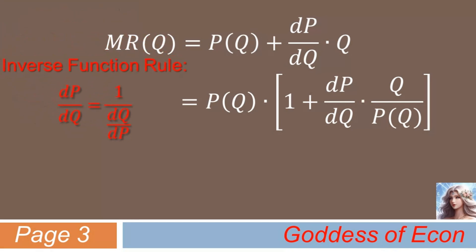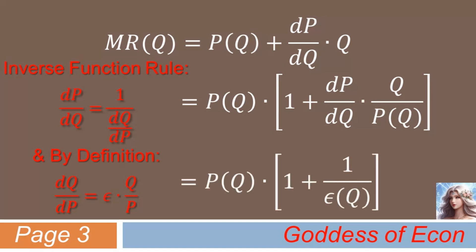In fact, if we utilize the inverse function rule in mathematics, we can see that dP dQ equals 1 over dQ dP. And using the following equation, which is just derived from the definition of price elasticity of demand, you can see that the whole second term in the bracket on the right-hand side is equivalent to 1 over price elasticity of demand. Therefore, we have marginal revenue equals P of Q times 1 plus 1 over price elasticity of demand, as shown here.